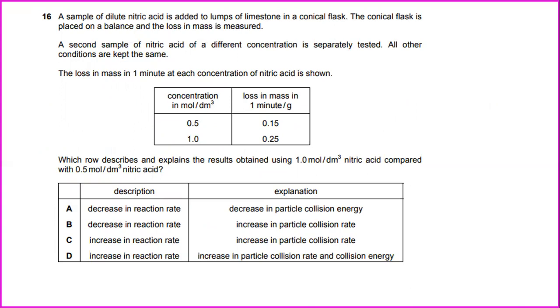A sample of dilute nitric acid is added to a lump of limestone in a conical flask. The conical flask is placed on a balance and the loss in mass is measured. A sample of nitric acid of different concentration is separately tested. All other conditions are kept the same. The loss in mass in one minute at each concentration of nitric acid is shown. Which rule describes and explains the result obtained using 1 mole per dm³ nitric acid compared with 0.5 mole per dm³ nitric acid? The answer will be increases in the reaction rate and also increase in the particle collision rate.